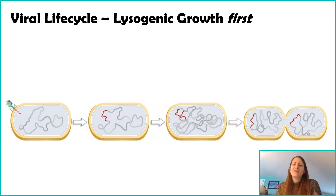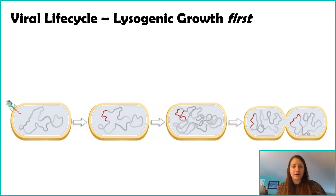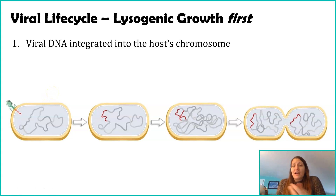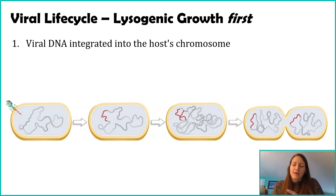In this picture, again looking at a bacteriophage and a bacterial cell, the process is very similar to what we see in other organisms. Similarly, the first step is the virus latches onto a cell and injects its nucleic acid, whether it's DNA or RNA. But in lysogenic growth, that DNA or RNA does not immediately get copied and read to create viral proteins — that's not what happens.